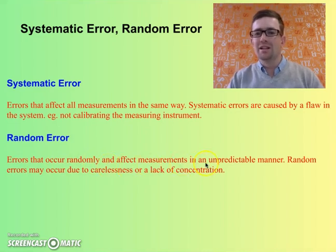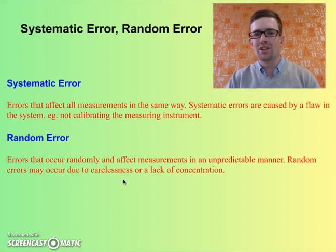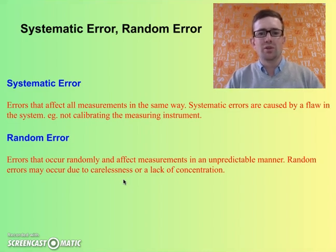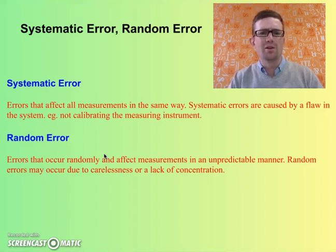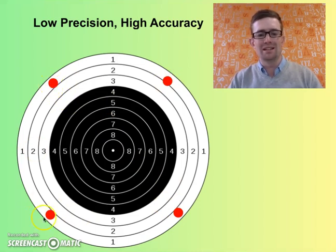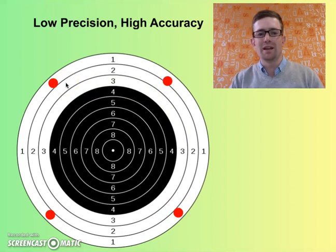Random errors are errors that occur randomly and affect measurements in an unpredictable manner. Random errors may occur due to carelessness or lack of concentration — you sometimes hear them referred to as human error. But what you need to realise is that random errors are random, and no matter how careful you are, whenever a measurement is taken a random error will occur. It's the magnitude of the random error that we can control, but random errors will always be present — we can minimise their effect but can't stop them from happening. Random error affects precision.